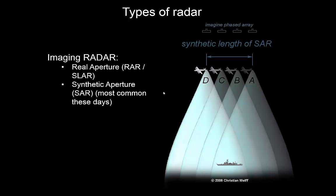Now what is SAR? It's a bit complicated to explain. Essentially, what the 'synthetic' stands for is the fact that because your platform moves at a certain speed, your antenna — or the length over which you are measuring returns from the surface — is increased. The synthetic refers to the fact that because of your forward speed you're resembling a longer antenna than you would if you were stationary.